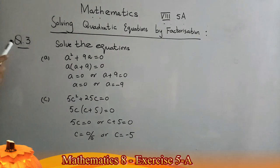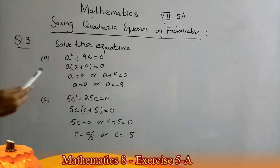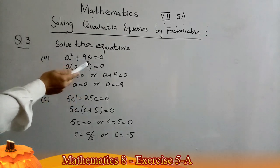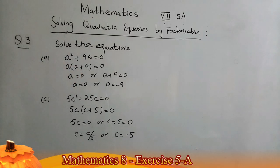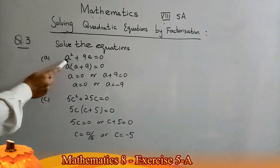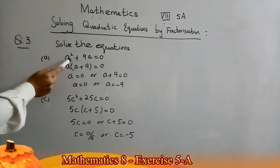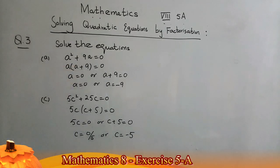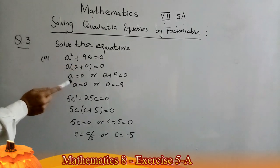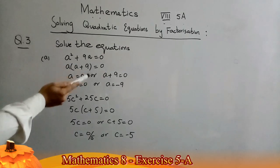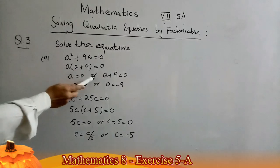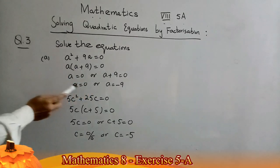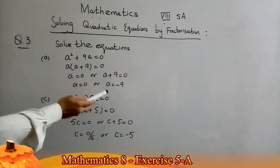Question 3: solve the equations — find the value of a. The equation is a² + 9a = 0. This has two terms and the common factor is a, so taking a as common: a(a + 9) = 0. Either a = 0 or a + 9 = 0, giving a = 0 or a = −9. This is the solution of the given equation.